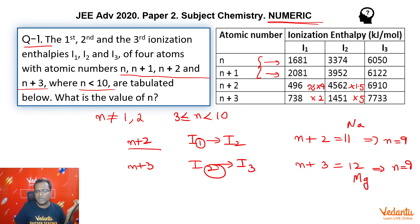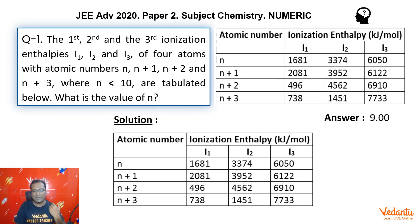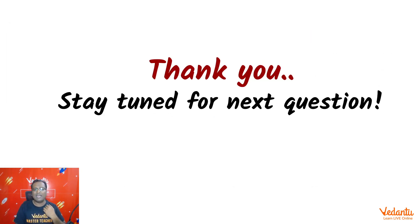So as I said, generally numeric type questions in inorganic, there is a double check available. So be careful. Hence, the answer here is guys, n equal to 9 atomic number. That's the first atom is fluorine. With this, we come to the end of this question guys. We also have the entire typed solution provided here for you. And thank you so much and stay tuned for the next question.